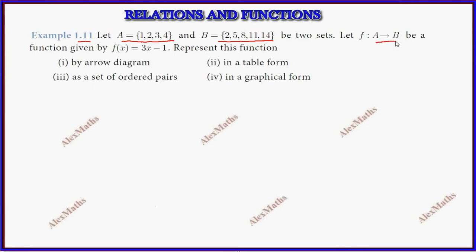Function A to B, f of x equals 3x minus 1. If we represent this function four ways, we'll get an arrow diagram, a tabular form, ordered pairs, and a graphical form.